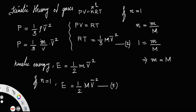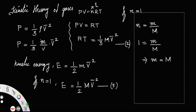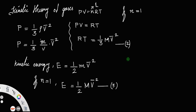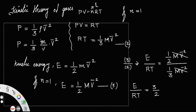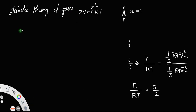Dividing equation 3 by equation 2: E/RT = (½Mv²) / (⅓Mv²). Cancelling Mv² from both sides gives E/RT = 3/2. Therefore, kinetic energy E = (3/2)RT.